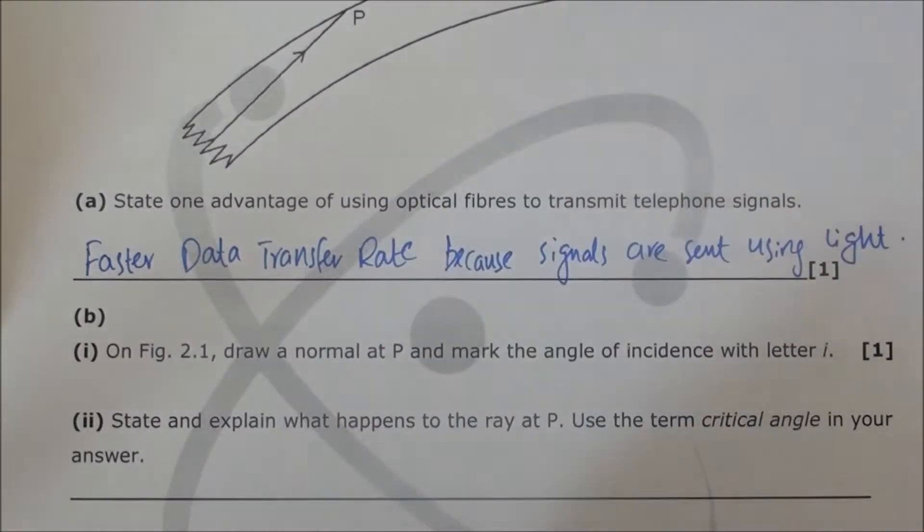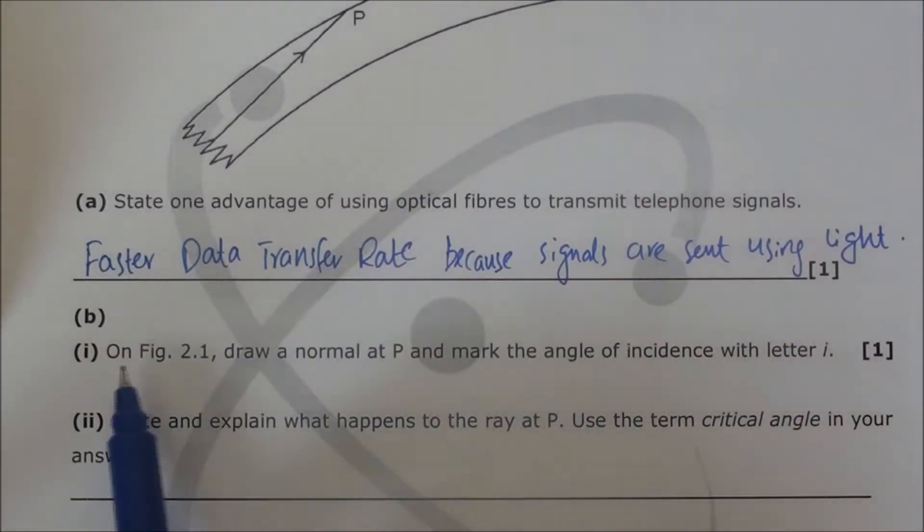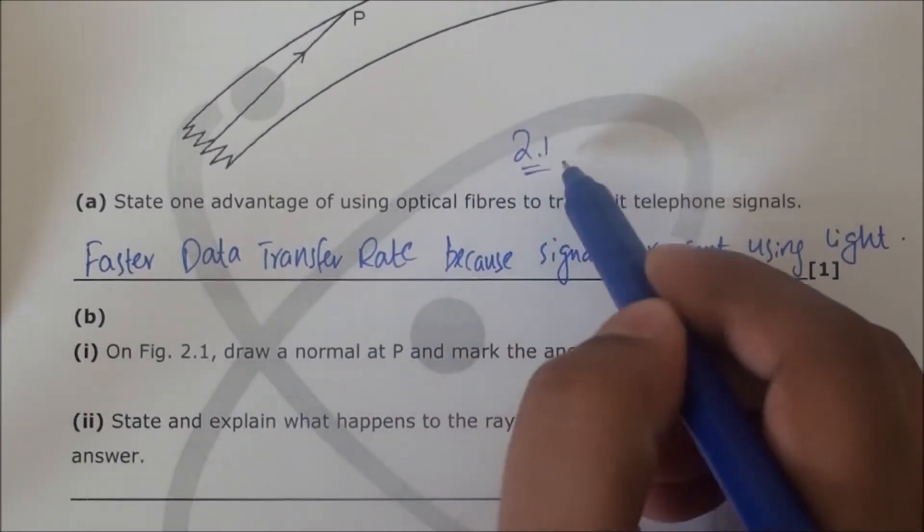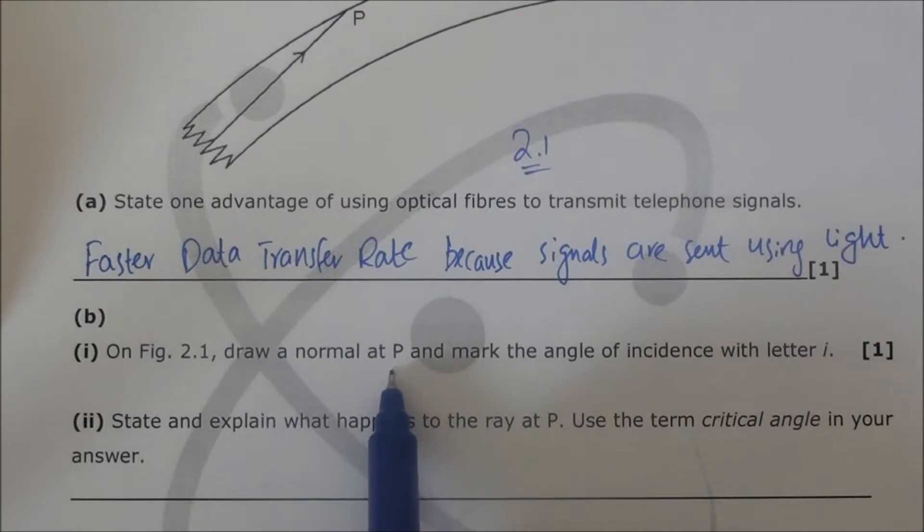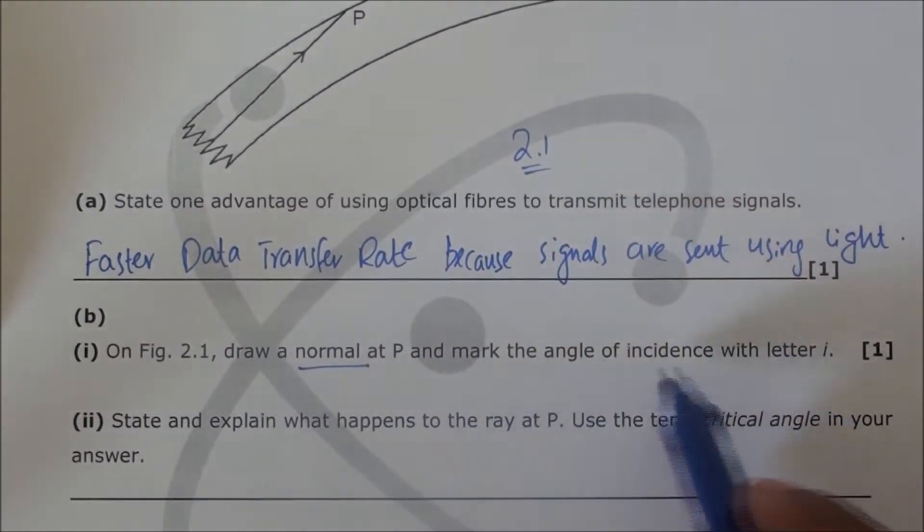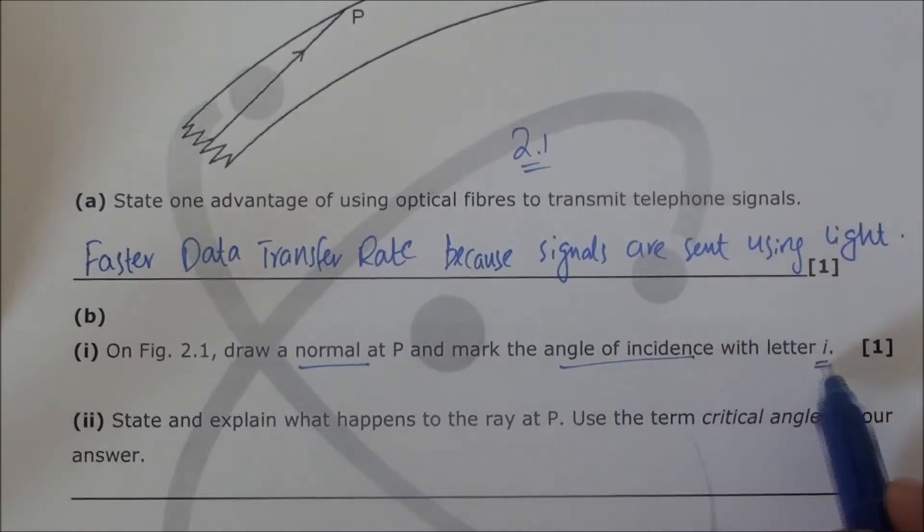The next part is on figure 2.1. Draw a normal at P. This is very important - we have to draw a normal at P and mark the angle of incidence with letter i.